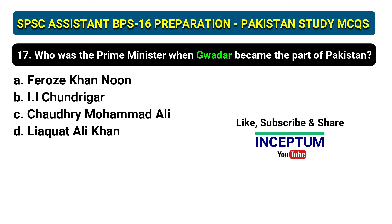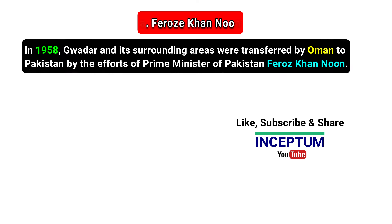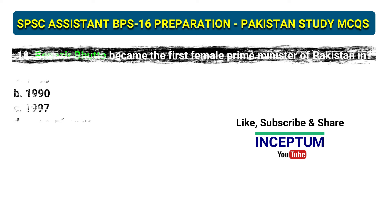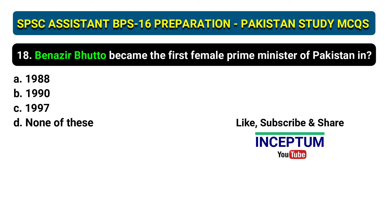Question 17: Who was the Prime Minister when Gwadar became part of Pakistan? Options: Feroz Khan Noon, Ayub Chandrigar, Chaudhry Muhammad Ali, Liaquat Ali Khan. The correct answer is option A, Feroz Khan Noon. In 1958, Gwadar and its surrounding areas were transferred by Oman to Pakistan through the efforts of Prime Minister Feroz Khan Noon.